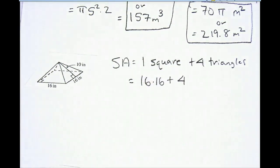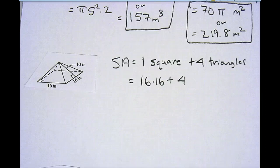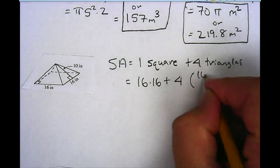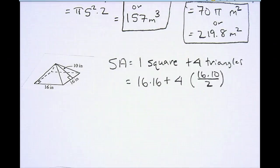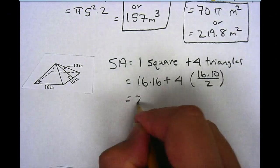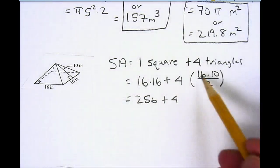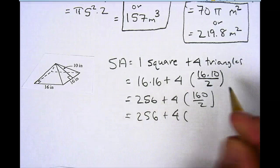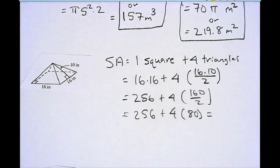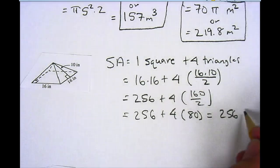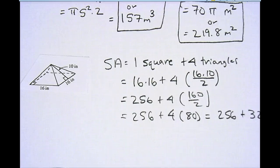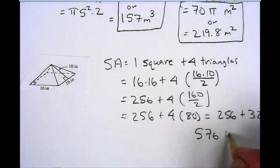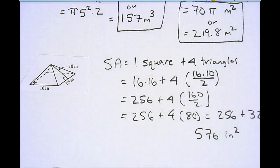Plus the four triangles are all the same. The base of each triangle is 16 and the height is 10. The area of a triangle is base times height divided by 2, so that's 16 times 10 divided by 2. If I do 16 times 16, that's 256, plus 4 times 160 divided by 2. That's 256 plus 4 times 80, which is 256 plus 320. Adding those up, I get 576 inches squared, so it would take 576 square inches to cover up that pyramid.